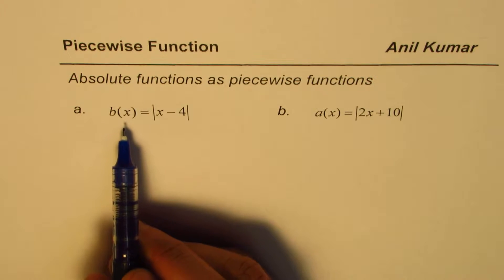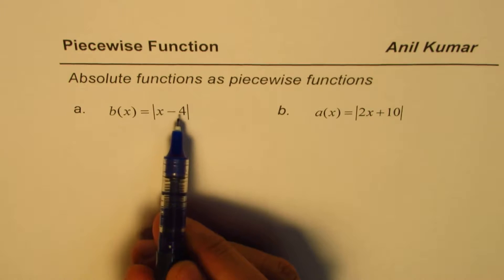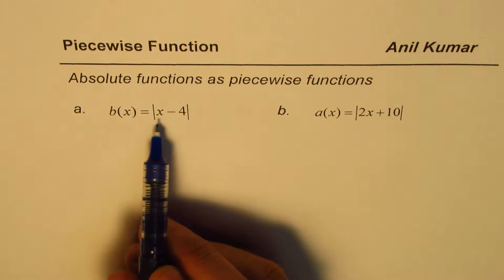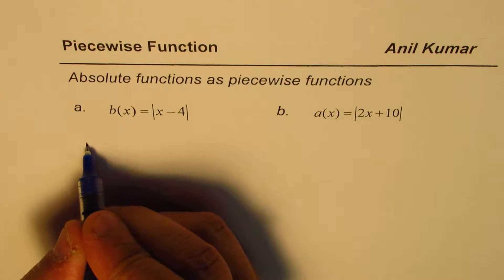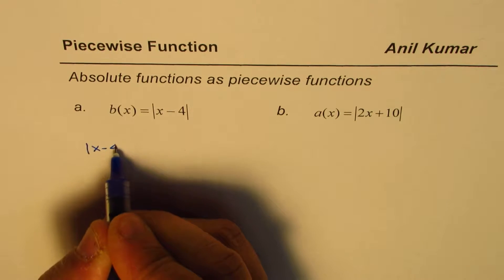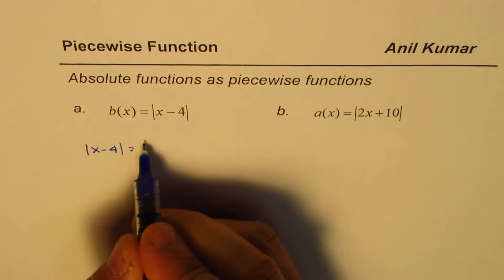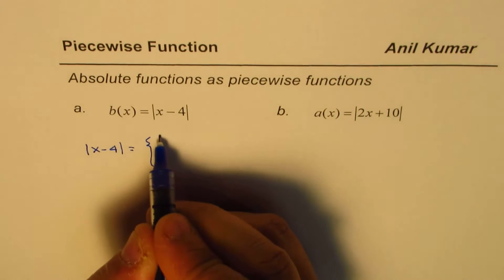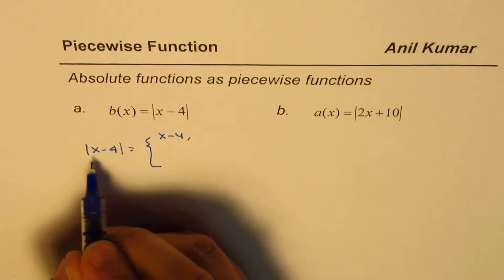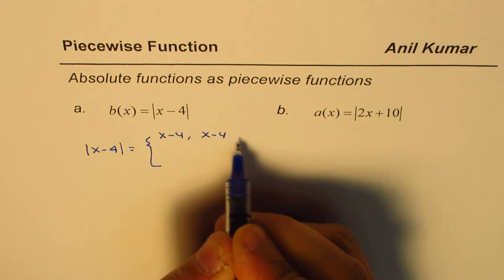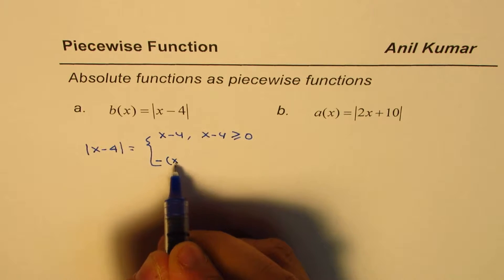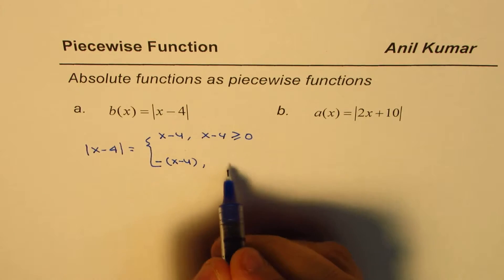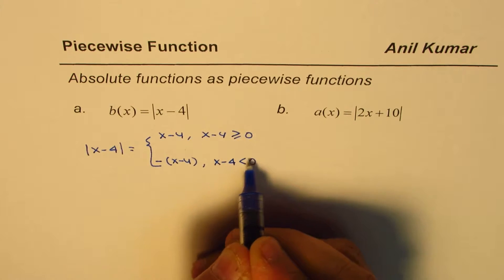Whenever you look at an absolute function, remember it can be written as a piecewise function. So let's redefine: the absolute value of x minus 4 equals the positive value, which is x minus 4, if x minus 4 is greater than or equal to 0. And it equals the negative of x minus 4 if x minus 4 is less than 0.